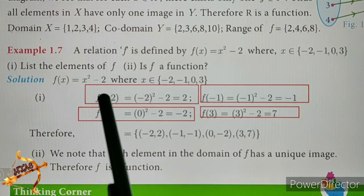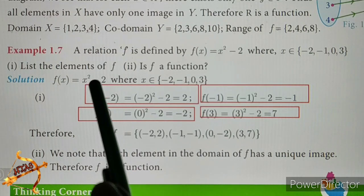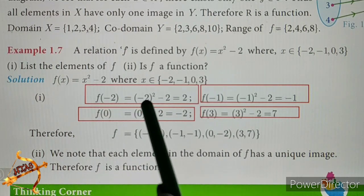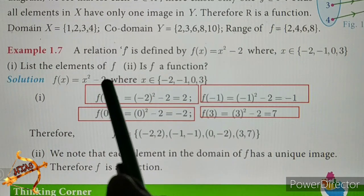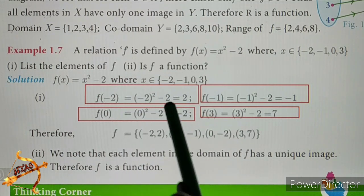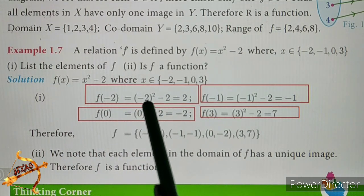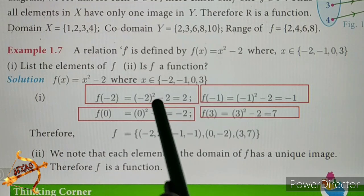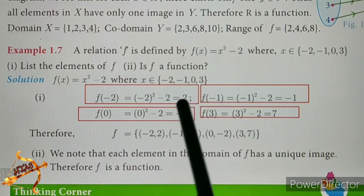x is equal to minus 2. Substituting, minus 2 whole square equals 4, and 4 minus 2 gives the answer 2.